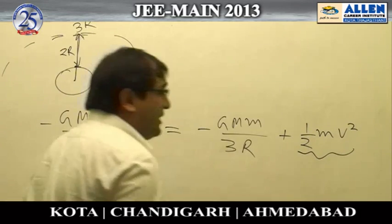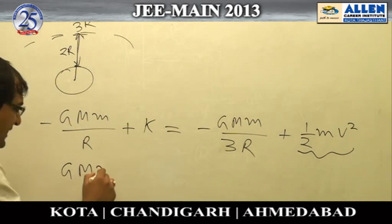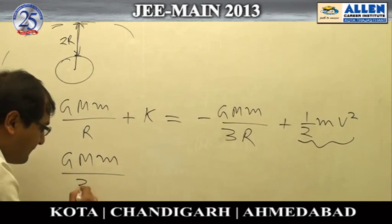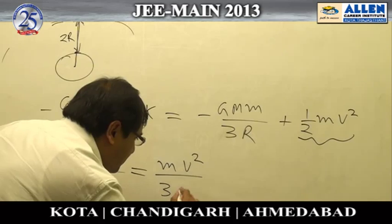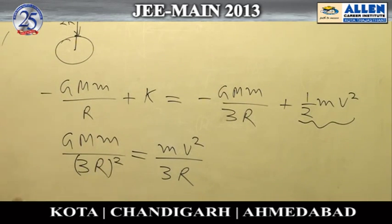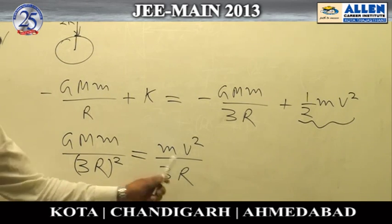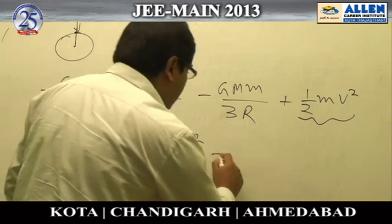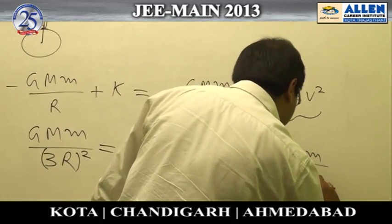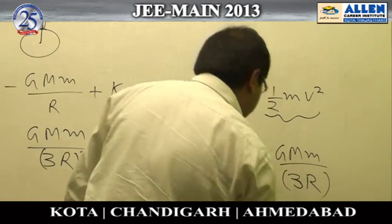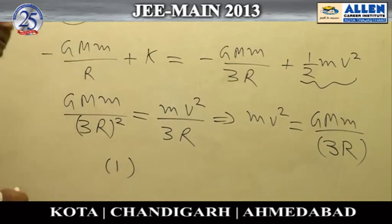To calculate the kinetic energy, we apply Newton's second law: the gravitational force provides the centripetal force for circular motion. Solving for mv², we get the value of mv² as GMm/3R. Substituting this value, we solve and get option number 1 as our answer.